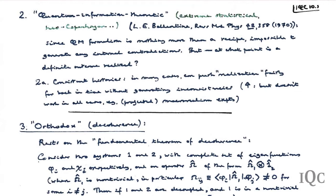The consistent histories interpretation essentially says the quantum formalism is nothing more than a recipe written on paper. Nevertheless, in many circumstances it is possible to interpret it in more quasi-objective terms: once a particular outcome to an experiment is obtained, one can retrace the history and say that at least to a certain point back in time, it is consistent to assume that the events which led to this particular outcome were realized.